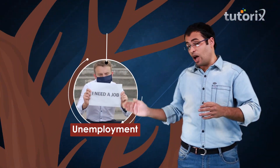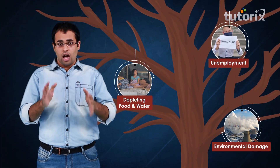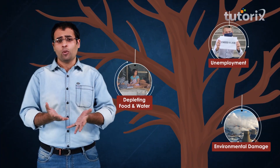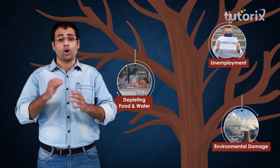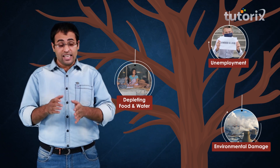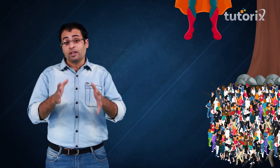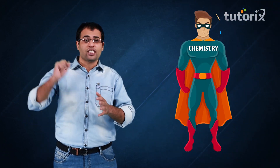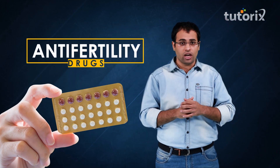This leads to various problems like depleting food and water, unemployment, environmental damage, and many other problems. To counter all these problems we need to address the root cause, which is increasing population. Here too chemistry comes to our rescue in the form of anti-fertility drugs.